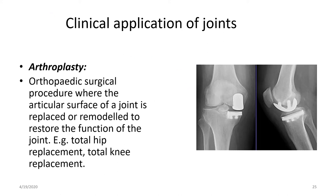Let us learn what is arthroplasty. It is an orthopedic surgical procedure where the articular surfaces of a joint — as seen in this picture of the knee joint — are replaced or remodeled to restore the function of the joint, such as in total hip replacement and total knee replacement.